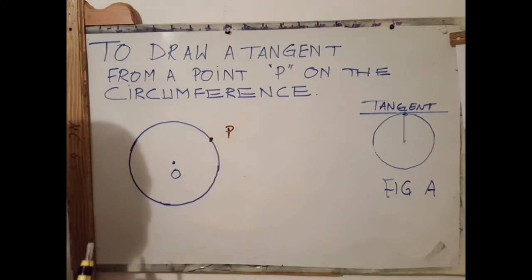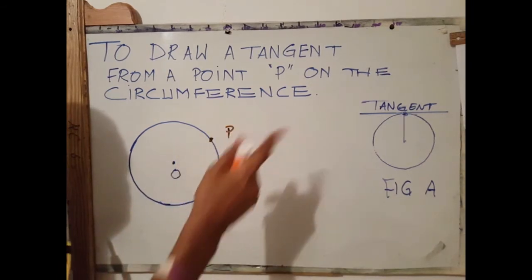The next step is to draw a random length line from O through to P and extend outward.